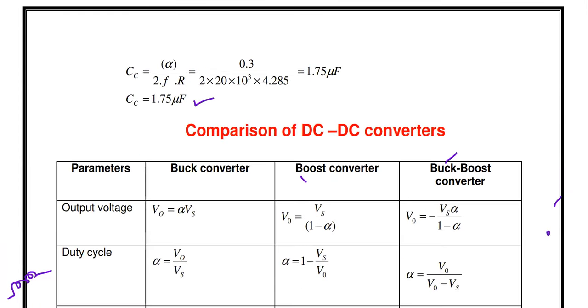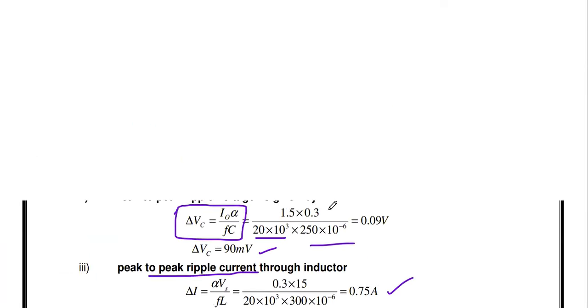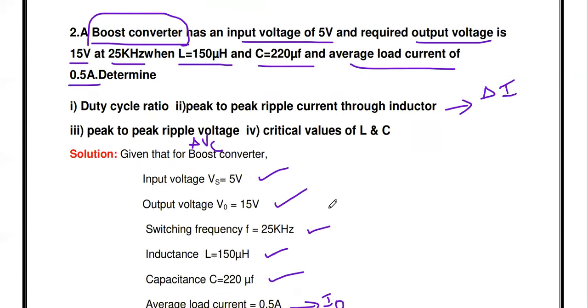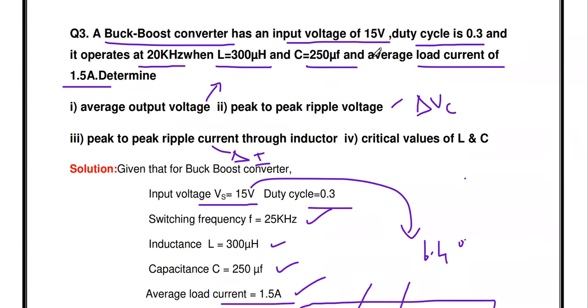All answers are calculated. In this video, we discussed three problems — one for the buck converter, one for the boost converter, and one for the buck-boost converter. If input and output voltages are known, calculate duty cycle. If input voltage and duty cycle are known, calculate output voltage.